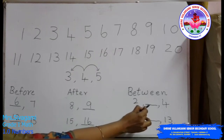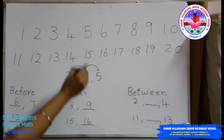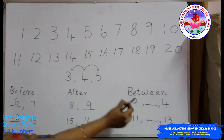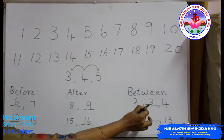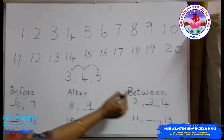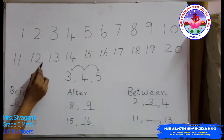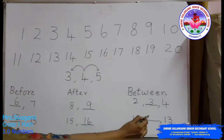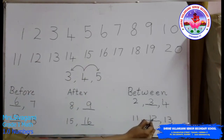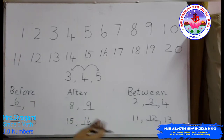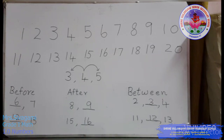Now we are going to find the 'between' numbers. We take 2 and 4 — the number in between two and four is three. Next, we take 11 and 13 — the number between 11 and 13 is 12. So these before, after, and between numbers help us to know the order of numbers. Numbers come in a certain order and they will not change.